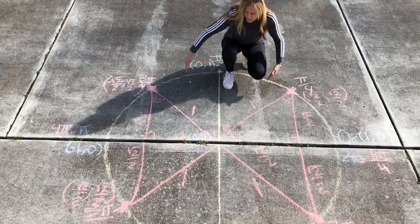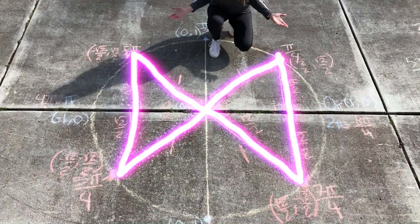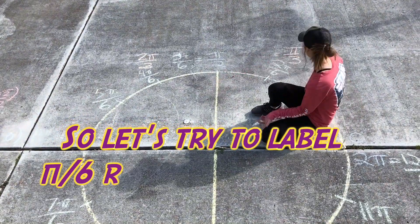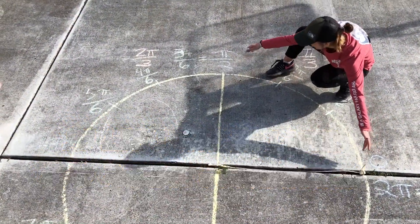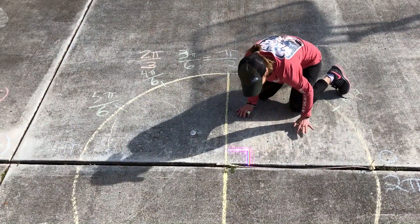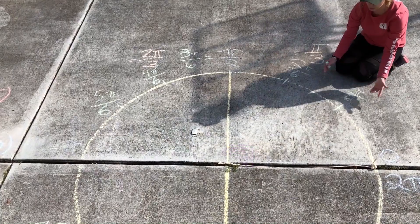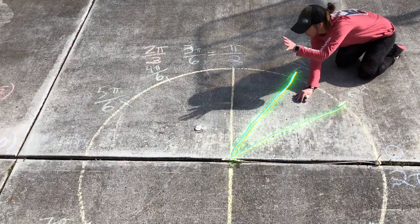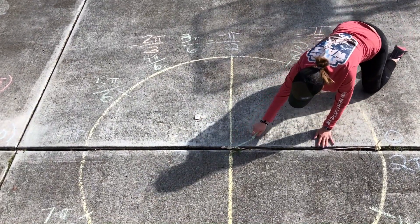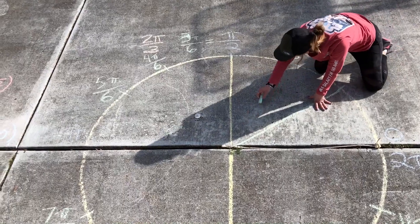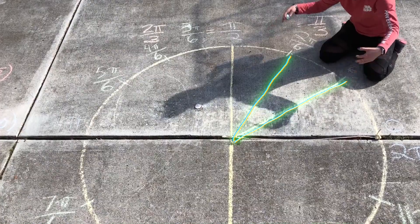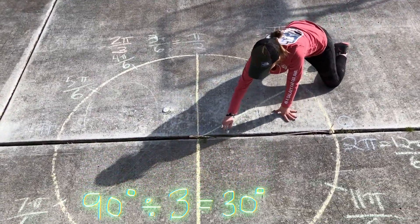We've labeled it — we could call this our pi over fourths bow tie. Let's try to do this with pi over sixes. This angle of pi over 2 radians is 90 degrees, and when we break it up into 1, 2, 3 parts, 90 degrees divided by 3 would be 30 degrees.